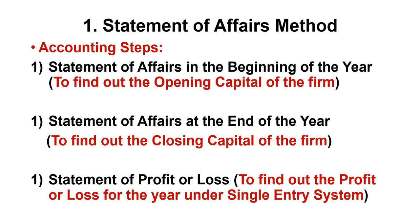We prepare a Statement of Affairs at the beginning of the year — for example, if the business started in January, the opening capital is from the previous year. We prepare the opening Statement of Affairs to find opening capital, and a closing Statement of Affairs to find closing capital. The difference between the two gives the Statement of Profit or Loss. That is the Single Entry System.